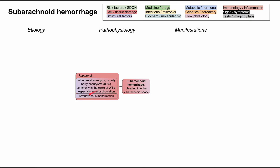Arteriovenous malformations can also cause subarachnoid hemorrhages, but they're also associated with intracerebral hemorrhages. These are distinct — intracerebral hemorrhage is bleeding into the brain parenchyma as opposed to bleeding into the subarachnoid space. Both are types of hemorrhagic stroke, but intracerebral hemorrhage is not what we're talking about here; there will be another video on that.